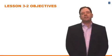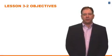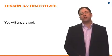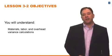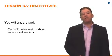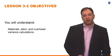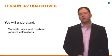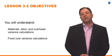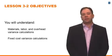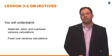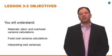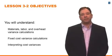Now moving into lesson 3-2. Our objectives in this lesson are to understand materials, labor, and overhead variance calculations — our variable cost variances. We'll get into the nuances of how we calculate those, do the same thing for fixed cost variance calculations, and then we'll talk about interpreting these cost variances as we calculate them.